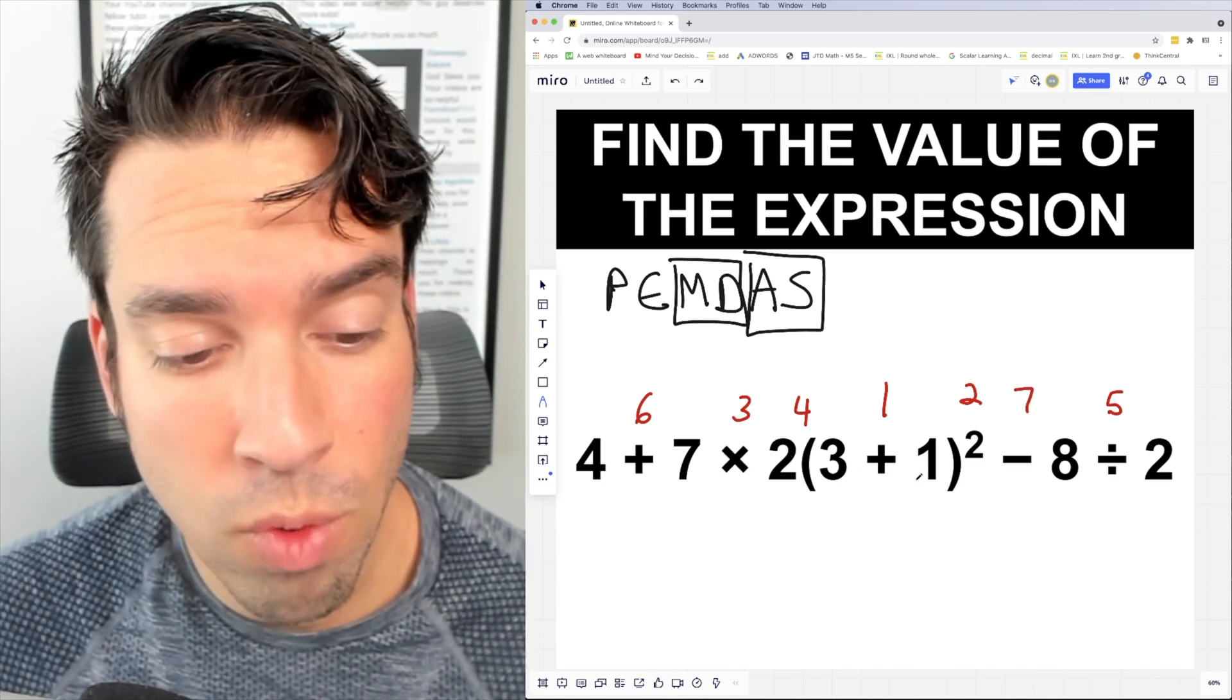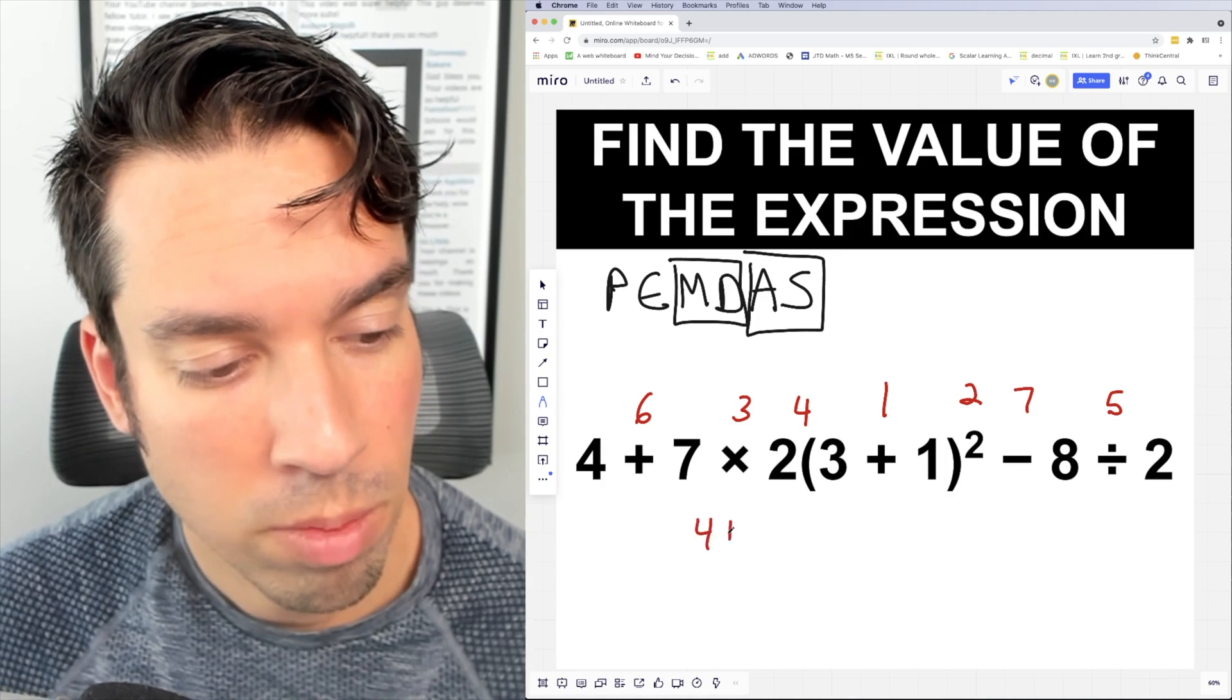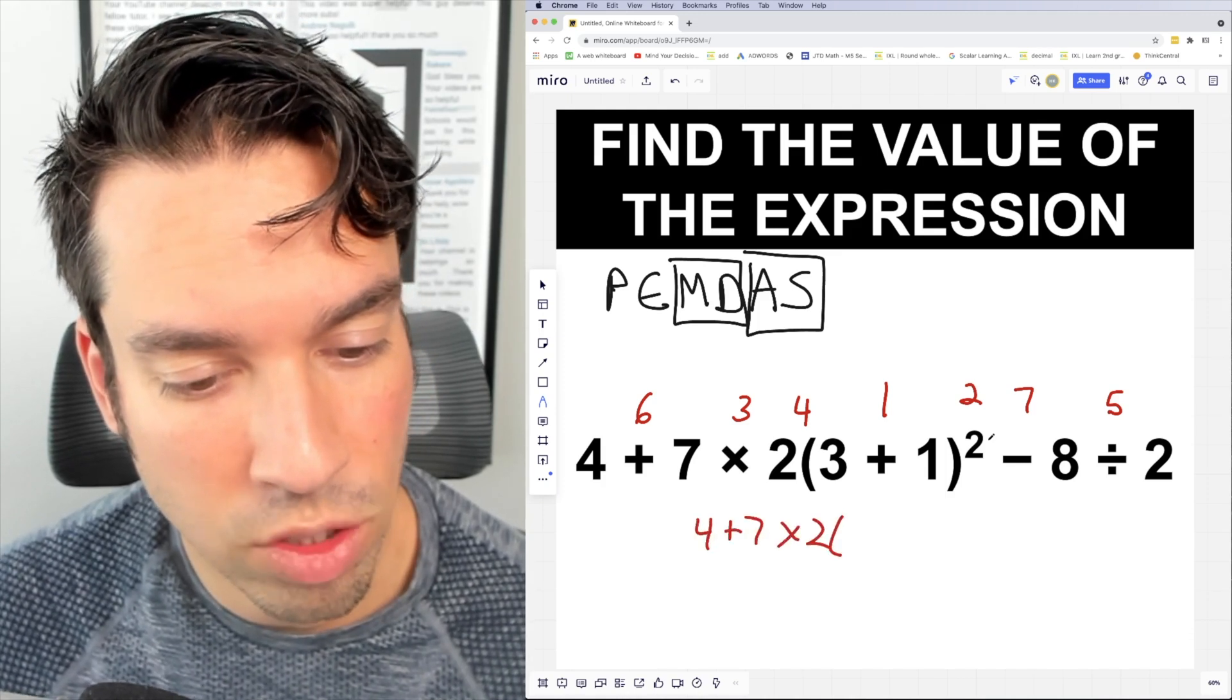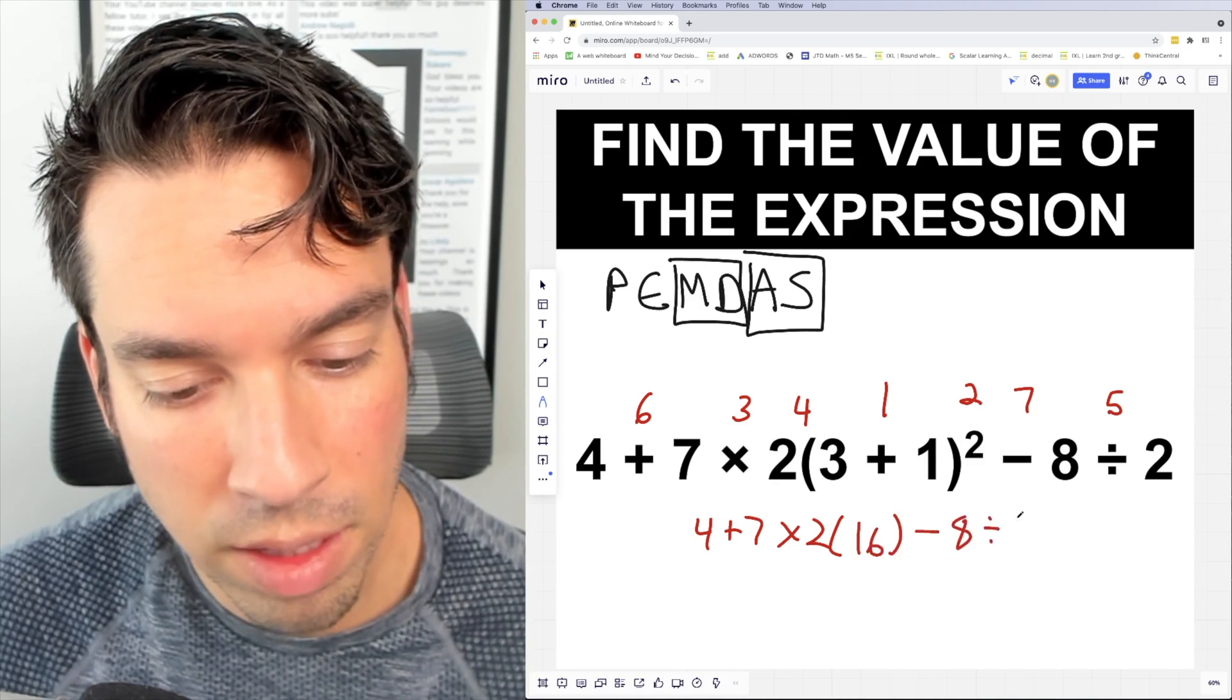First, we add the three plus one, which is four and square it. That is 16. So now I've got four plus seven times two times this is turned into 16 minus eight divided by two.